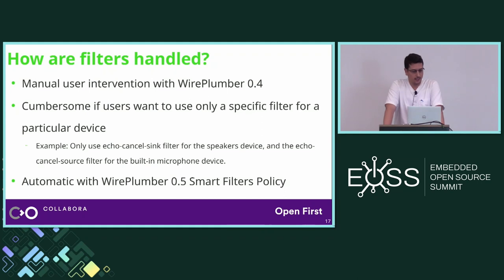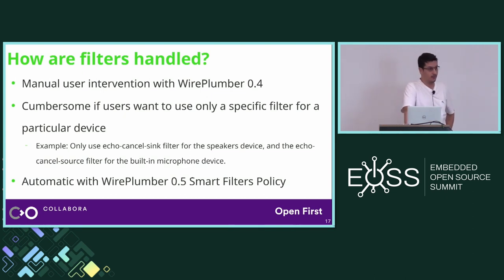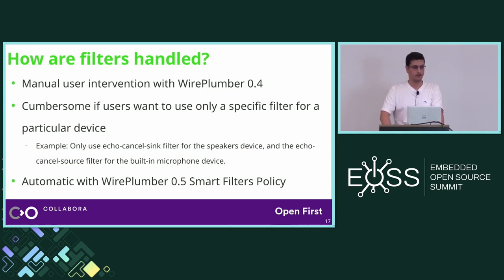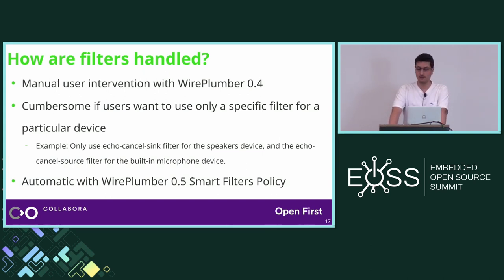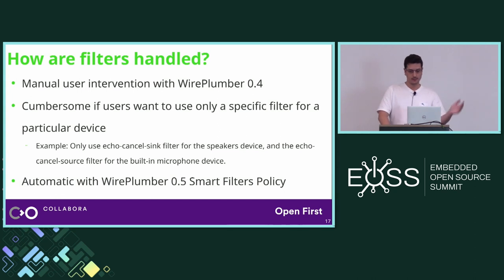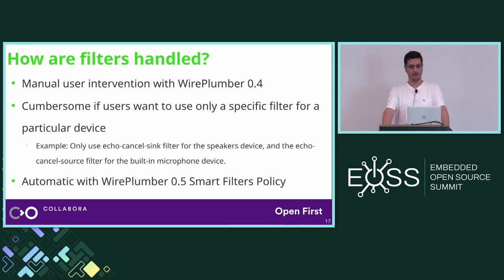This was one of the motivations to implement a smart filters policy — we only want to use specific filters when specific devices are being used. Up until now, manual user intervention with WirePlumber was needed to use filters for specific devices. By default, filters are always linked with the default input or output device, and if a user wanted to use them only for a specific device, they had to change the target manually using tools such as WirePlumber Control or PulseAudio Volume Control. This was quite cumbersome, so we decided to automate these tasks in WirePlumber 0.5.